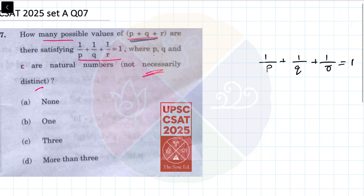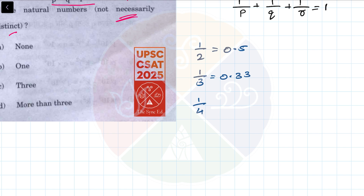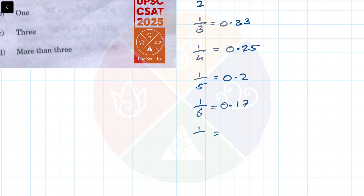Before directly solving this further, let me find some reciprocals: 1/2 = 0.5, 1/3 ≈ 0.33, 1/4 = 0.25, 1/5 = 0.2, 1/6 ≈ 0.17, 1/7 ≈ 0.14. Let's stop here. We are taking three of these values and adding them, with repetition allowed, to make 1.